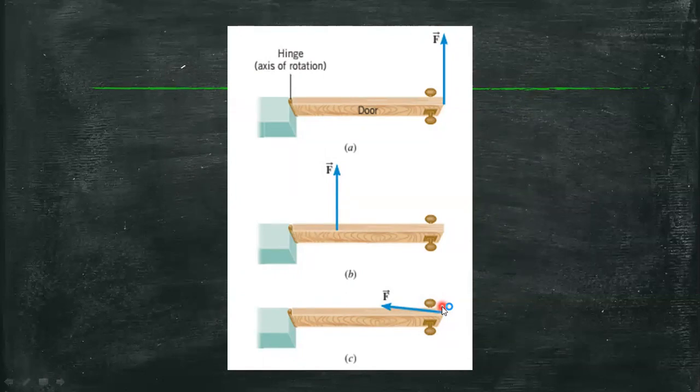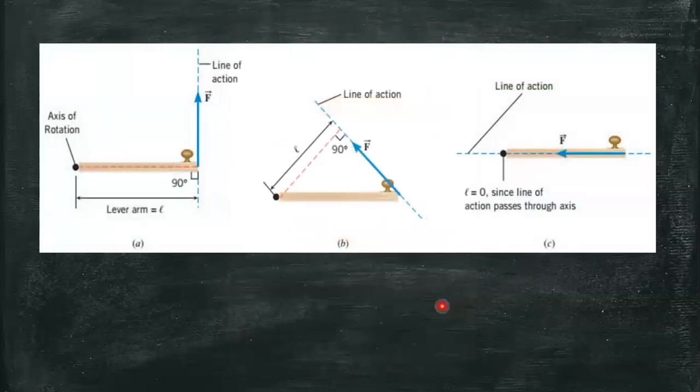For simplicity, we deal with the situation in which the force lies in a plane that is perpendicular to the axis of rotation. In this figure, for instance, the axis is perpendicular to the page or screen and the force lies in the plane of the paper. Considering this figure, we are looking at a top view. This drawing shows the line of action and lever arm of the force.